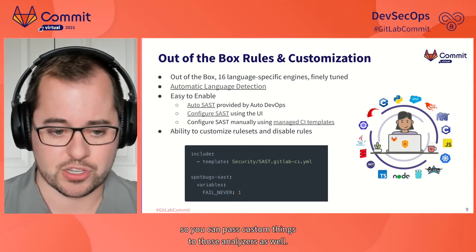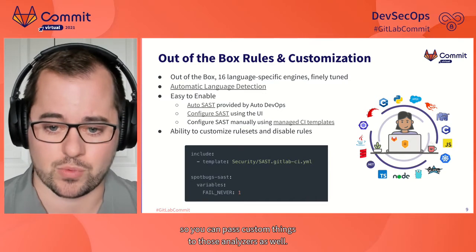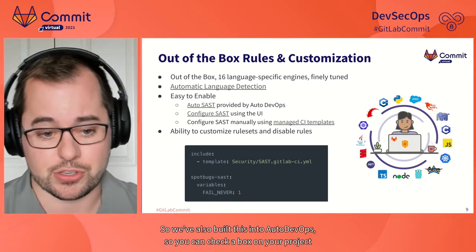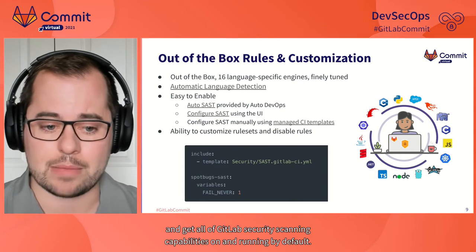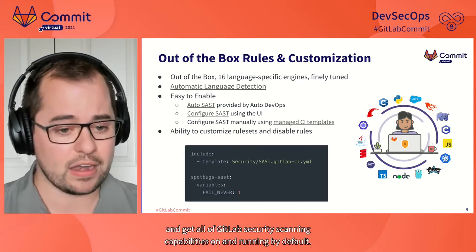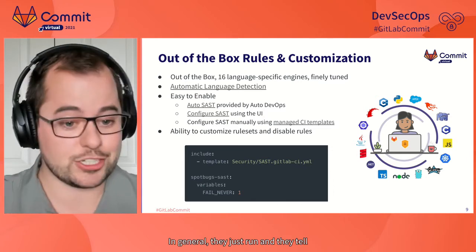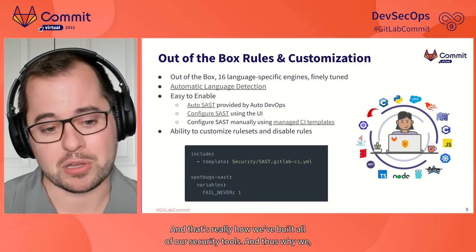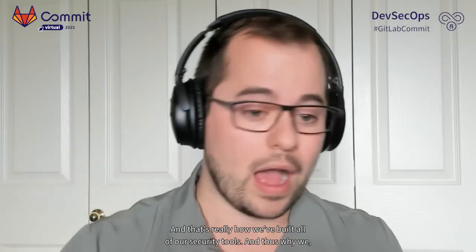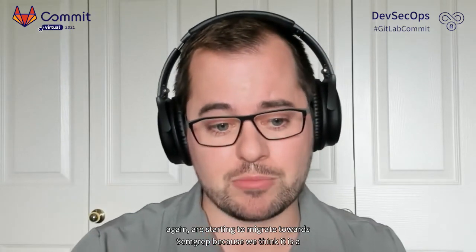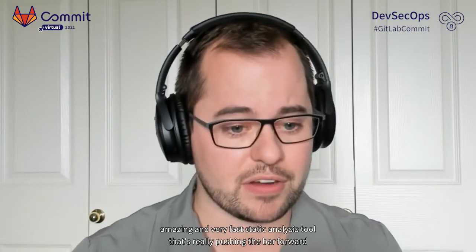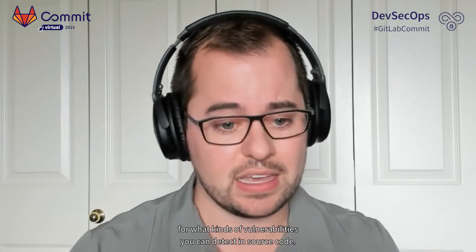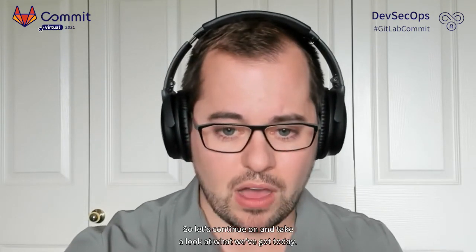All of this is built in and easily configured — all you have to do is include the SAST CI template. We also have a UI tool to easily enable and configure it, and we support customizing rule sets so you can pass custom configurations to those analyzers. We've also built this into Auto DevOps, so you can check a box on your project and get all of GitLab's security scanning capabilities on and running by default. This is also why we're starting to migrate towards Semgrep — it's an amazing and very fast static analysis tool that's really pushing the bar forward.